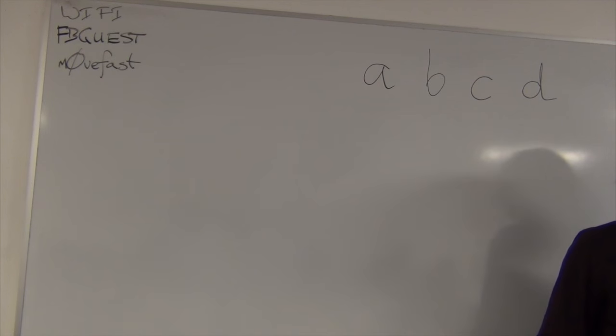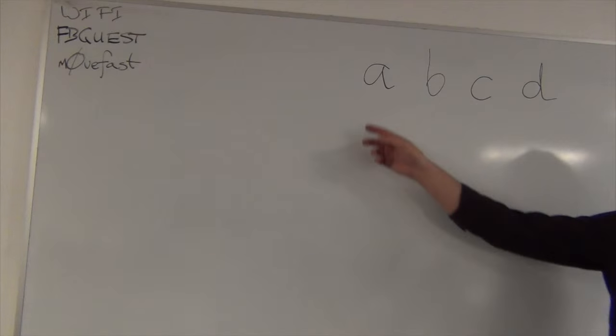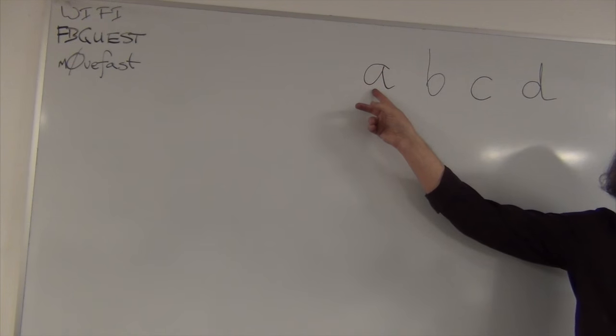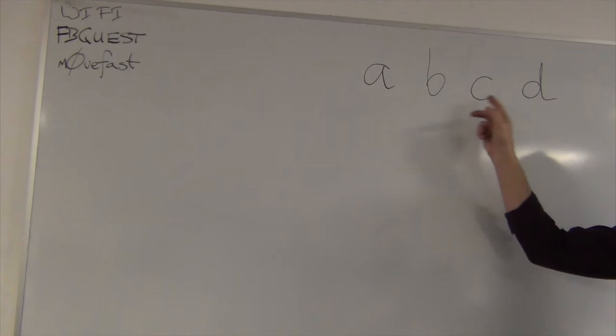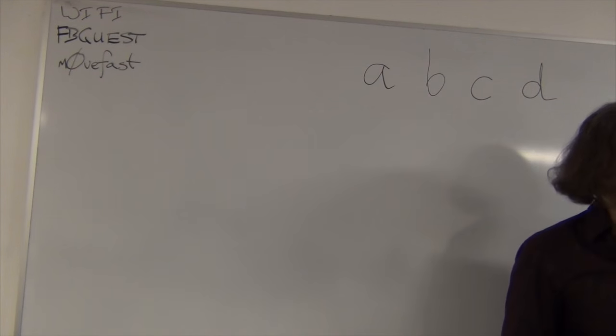Okay, so I'll tell you how the compiler, Haskell compiler parses it. It says A is a function, it's a function call. B, C and D are arguments to this function.